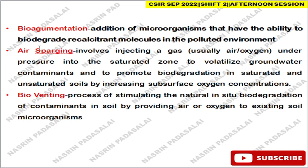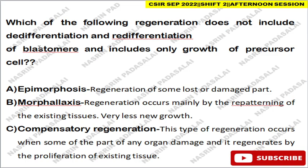Next, which mode of regeneration does not include de-differentiation and re-differentiation of blastema, and includes mainly growth of precursor cells? It is morphallaxis. There are three modes of regeneration: epimorphosis, morphallaxis, and compensatory regeneration. Epimorphosis means regeneration of a lost or damaged part. Morphallaxis means regeneration occurs mainly by re-patterning of existing structures — there is no de-differentiation or re-differentiation, and new growth is very minimal; it includes growth of precursor cells.